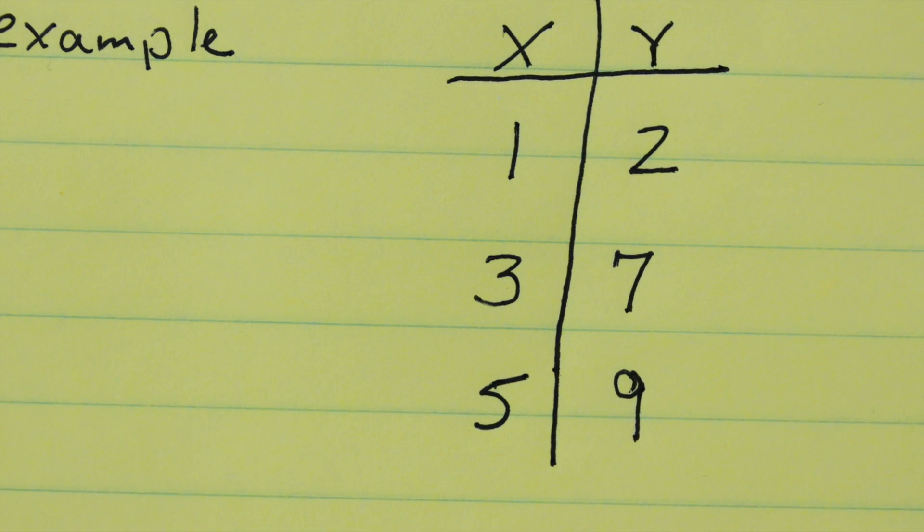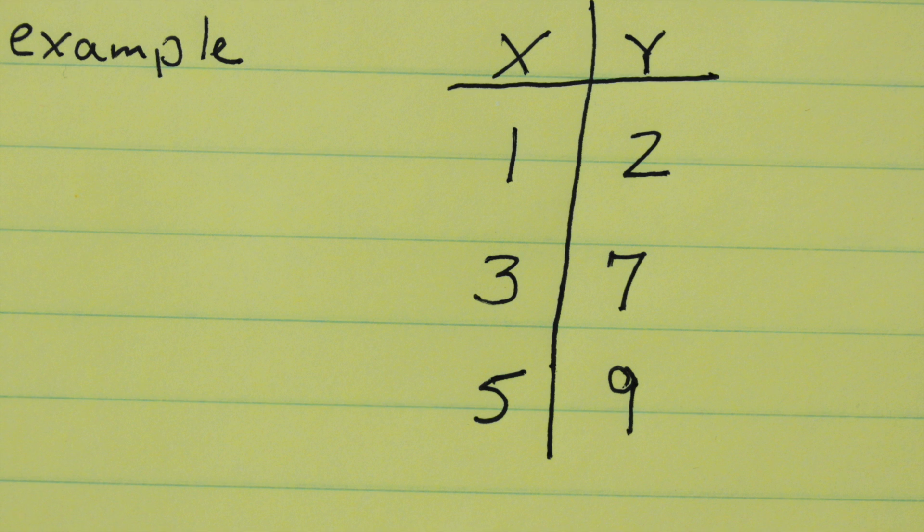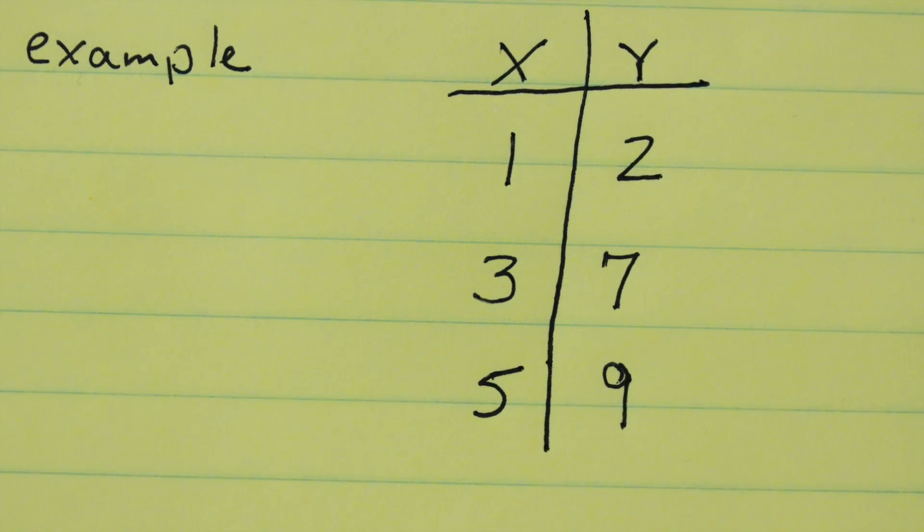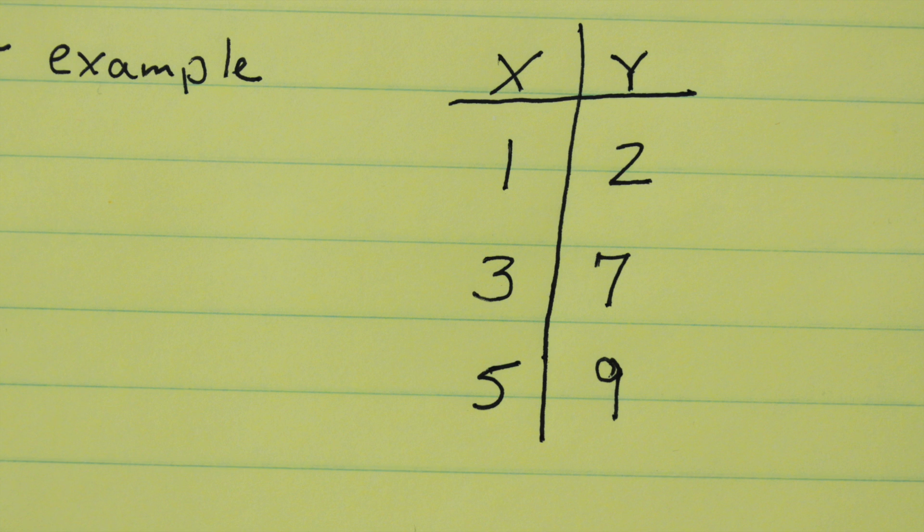For example, let's say we have three pairs of numbers. x is 1, y is 2, 3 and 7, and 5 and 9.